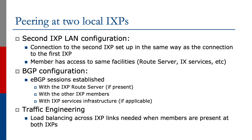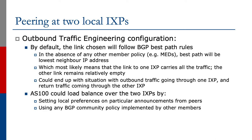Traffic engineering can be done by load balancing across the IXP links when members are present at both IXPs. For outbound traffic engineering, by default the link chosen will follow BGP best path rules. In the absence of any other member policy — for example MEDs or communities — best path will be the lowest neighbor IP address. This most likely means that the link to one IXP carries all the traffic and the link to the other IXP remains relatively empty. We could end up with outbound traffic going through one IXP and return traffic coming through the other, especially if other members follow the same default behaviors.